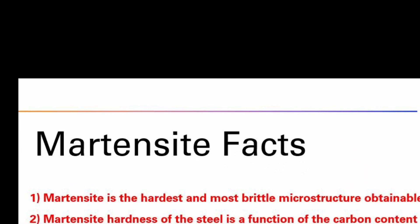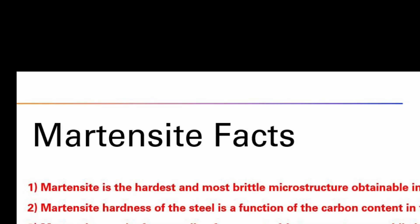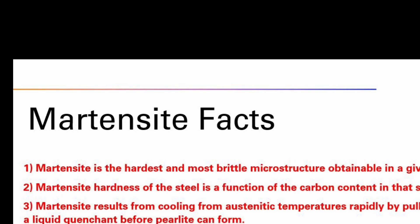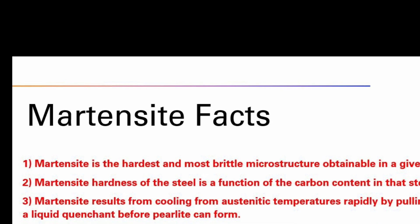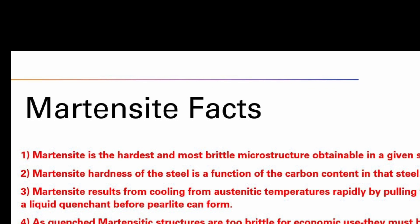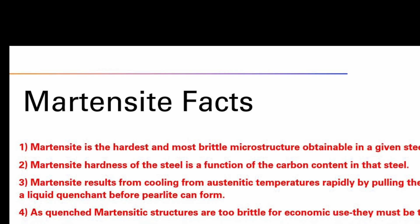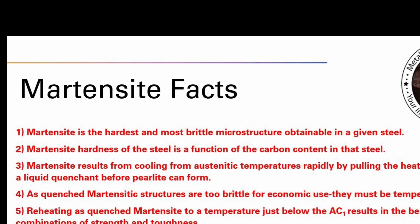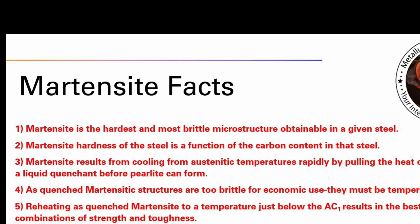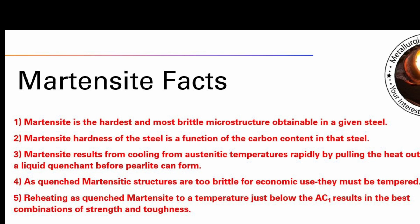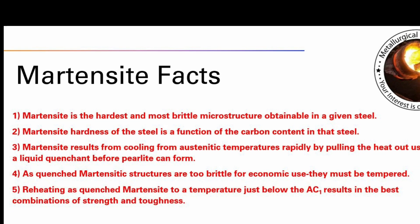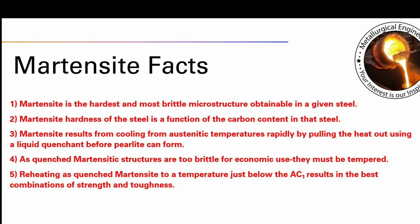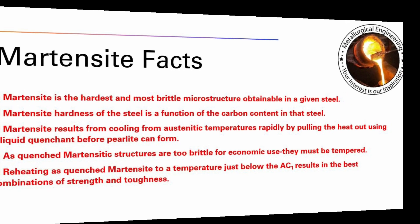Key points: 1. Martensite is the hardest and most brittle microstructure obtainable in a given steel. 2. Martensite hardness of the steel is a function of the carbon content in that steel. 3. Martensite results from cooling from austenite temperatures rapidly using a liquid quench before other structures can form. 4. As-quenched Martensite structures are too brittle for practical use and must be tempered. 5. Preheating as-quenched Martensite to a temperature just below the AC-1 results in the best combinations of strength and toughness.